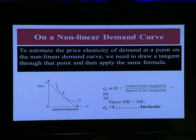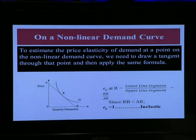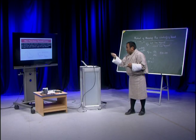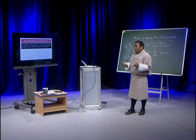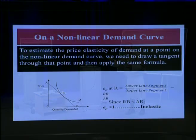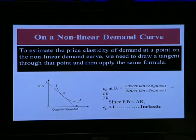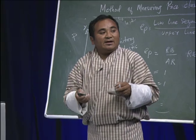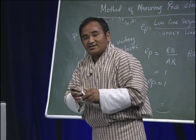Price elasticity of demand at R is lower line segment divided by upper line segment: RB divided by AR. If RB is less than AR, the numerator is less than the denominator. Whenever the numerator is less than the denominator, you will always get an answer less than 1. So at this point, the type of elasticity will be inelastic demand.